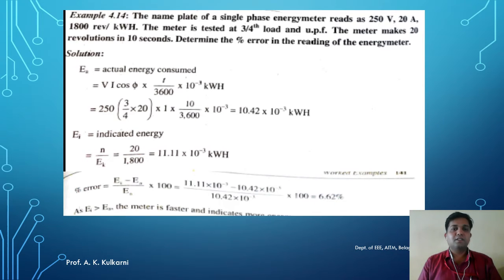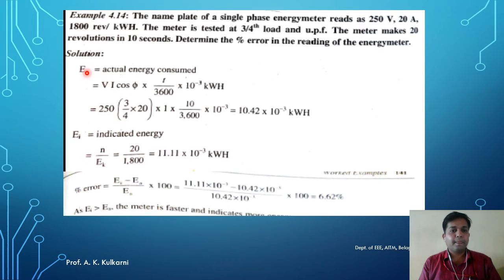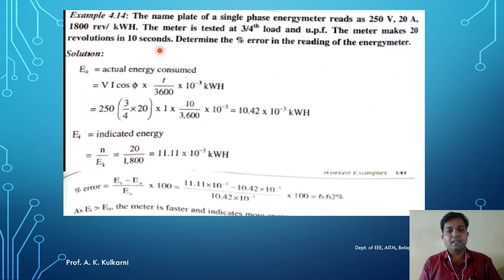Now let us solve some problems on these errors in energy meters as well as the wattmeter. Let us consider our first problem. The name plate of a single-phase energy meter reads 250 volts, 20 ampere. It has 1800 revolutions per kilowatt hour. The meter is tested at three-fourth load and unity power factor. The meter makes 20 revolutions in 10 seconds.